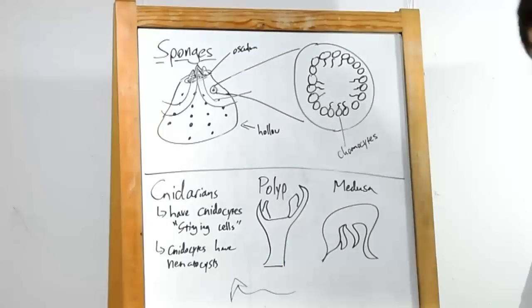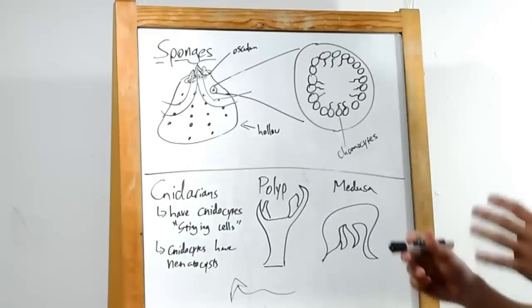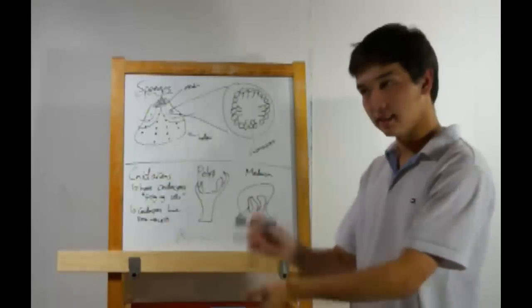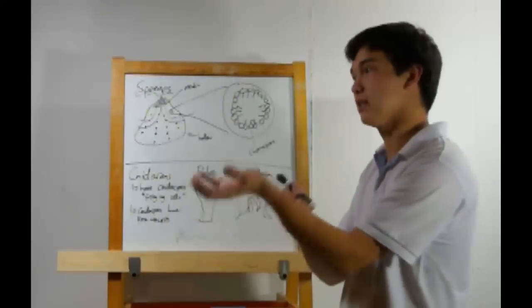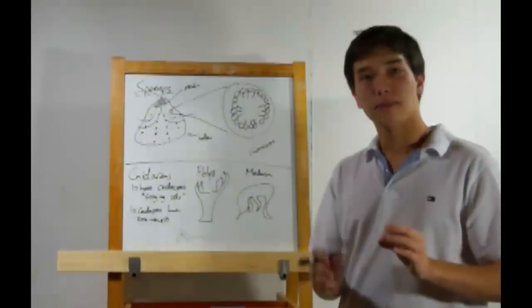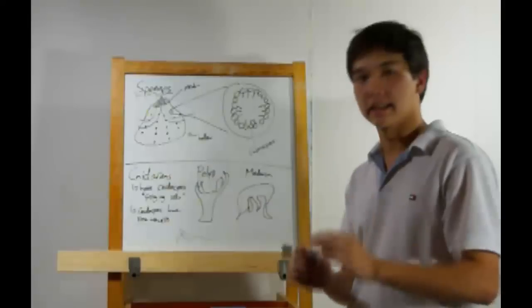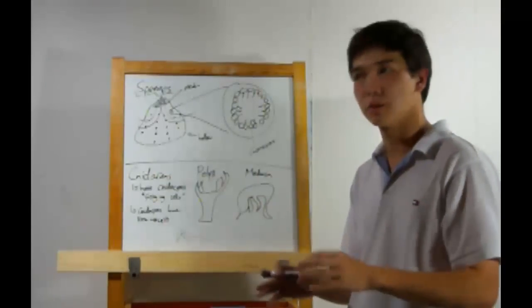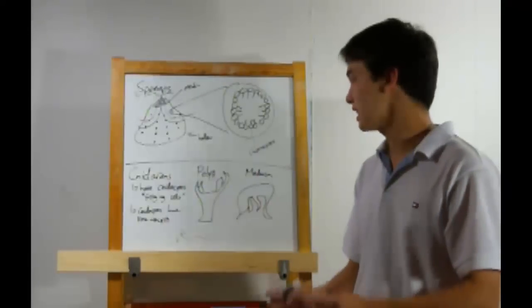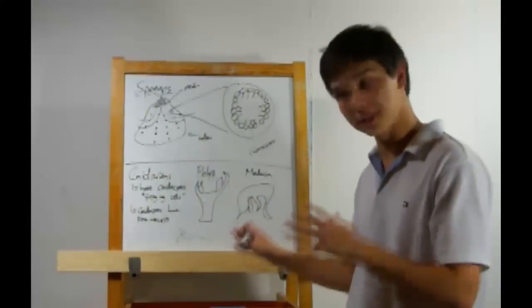These things are really nasty. They're barbed, they've got a big coil. When you get stung by a cnidarian, they'll shoot this barb into you, and they'll just pump toxin in. Now, usually it's not all that toxic. For sea anemones, not so bad. But if you get stung by a jellyfish, those things can really hurt.